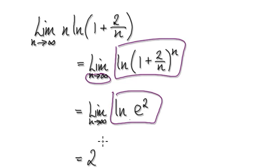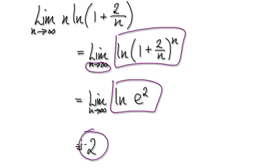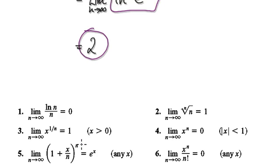Now, natural log of e squared gives you 2. So the limit will be 2.